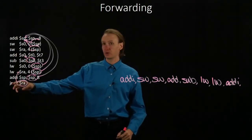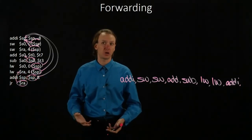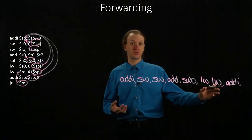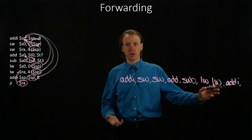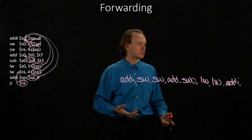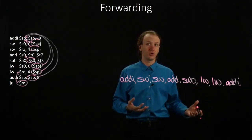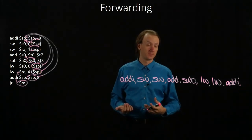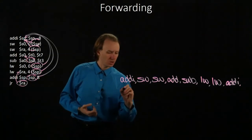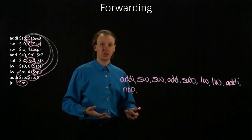Lastly, we have our jump register instruction. This is dependent on the results of the load word instruction before it, but the load word instruction isn't going to be able to read the return address until the fourth stage. Our jump register instruction would like to use that data in the second stage, so I need to wait at least two cycles. I'm filling one of those stages with the add immediate, so I'll have one no-op instruction, and then I can run my jump register instruction.